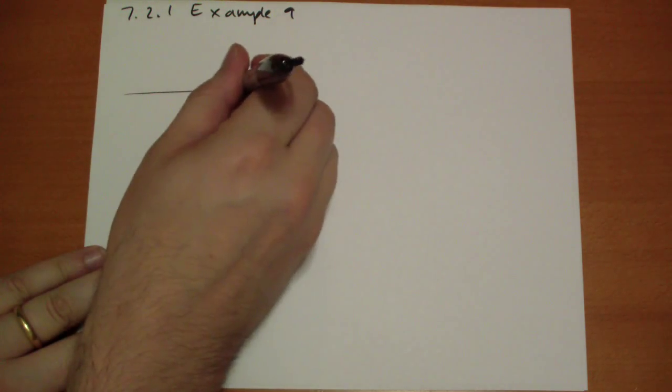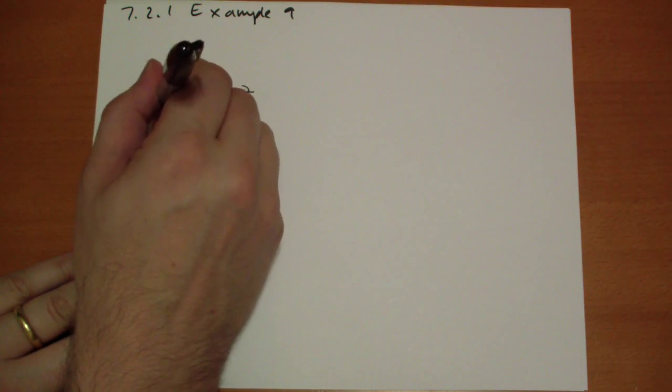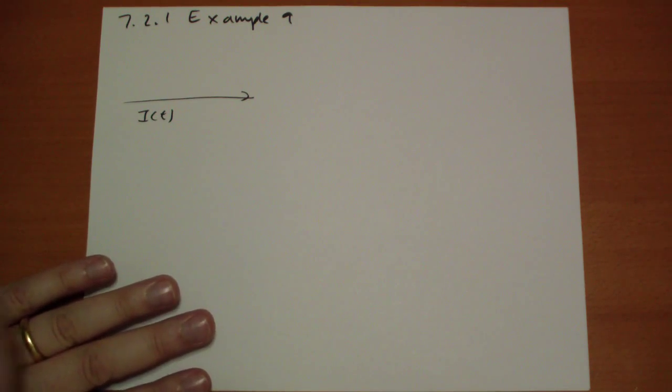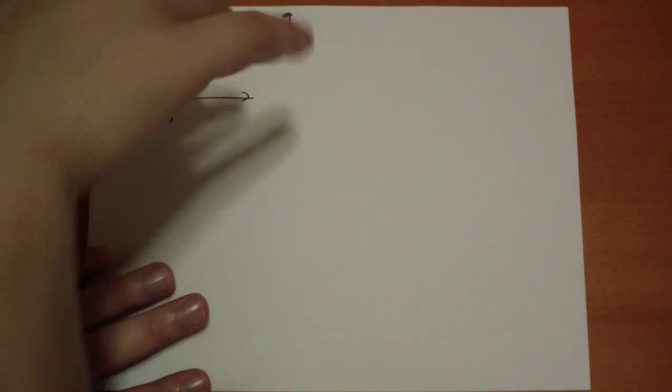And Ampere's Law and all those different things. So we have an infinitely long straight wire carrying a current I that varies according to time. This of course generates a B field that's pointing perpendicular around I.